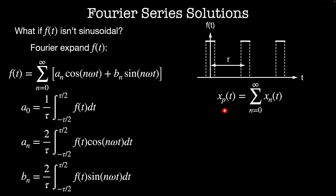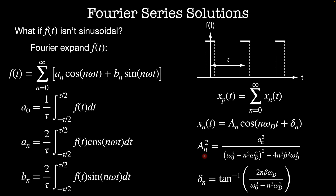Then the particular solution x_p of t is equal to the sum of solutions x_n of t for each n in the Fourier series, where x_n of t equals a_n times cosine(n omega_d t plus delta_n), with a_n squared equal to a_n squared divided by the quantity omega naught squared minus n squared omega_d squared, all squared, plus 4 n squared beta squared omega_d squared, and delta_n equals arctan of 2n beta omega_d divided by omega naught squared minus n squared omega_d squared. In the next video, we'll start studying interacting systems by looking at coupled oscillators. Thanks for watching, and I'll see you next time.